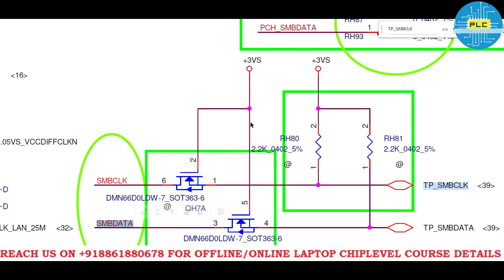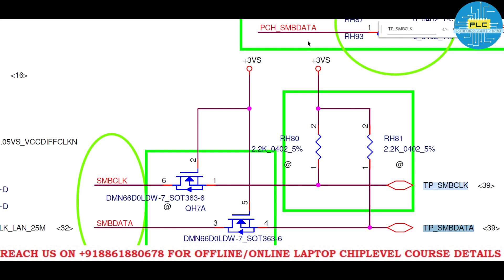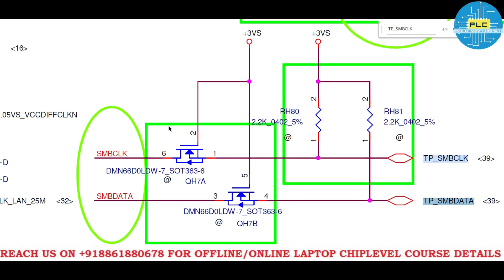Similarly for SMB data — it's the same thing. The 3V suspend enables this MOSFET base. Once this MOSFET is active, SMB data and TP SMB data become the same. So SMB data becomes TP SMB data. The main point to note is this logic circuit in the touchpad. There are two clock/data paths: one connected to the IO and the other connected to the PCH through this logic. Check this logic carefully if you are unable to get data and clock.